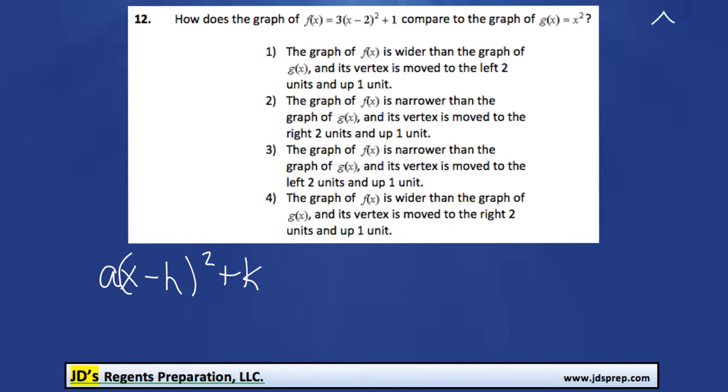Because if you use your graphing calculator, you'll notice that x² looks a little like this. And then if you graph and compare the other one, 3(x - 2)² + 1, you'll notice that the vertex moves over here and it's also a little bit narrower, steeper like that. So you should be able to figure out the answer based on that.